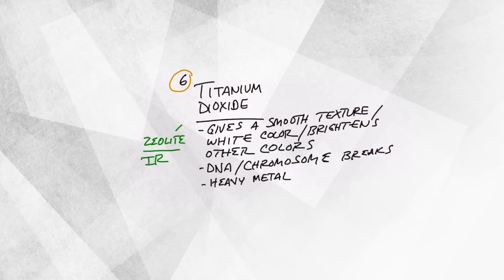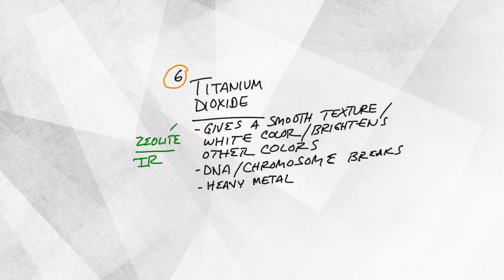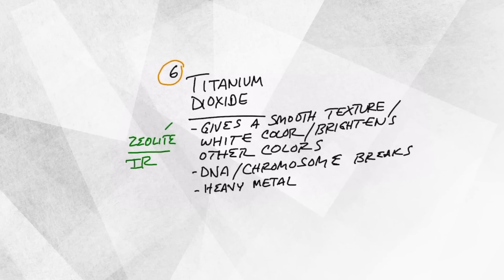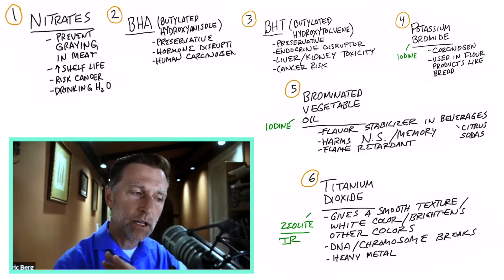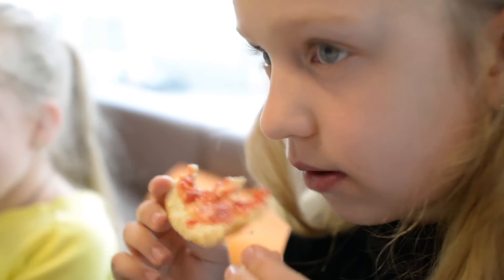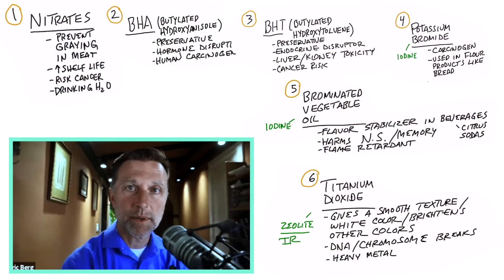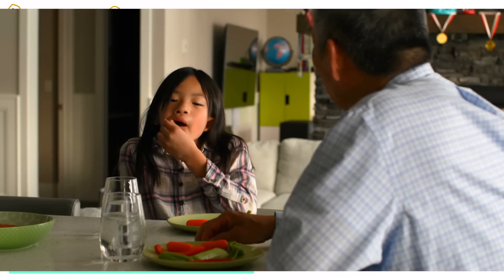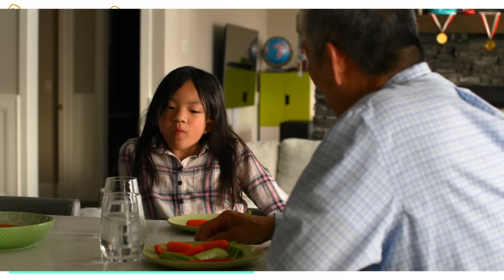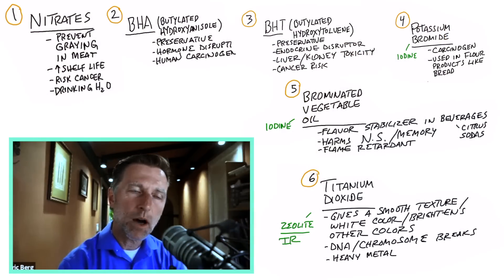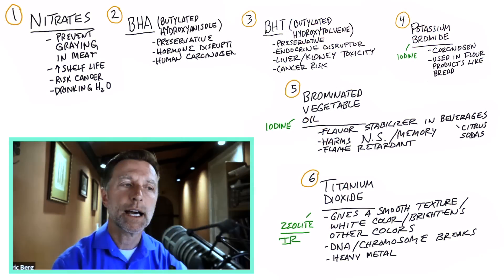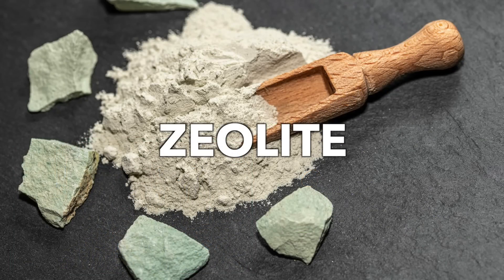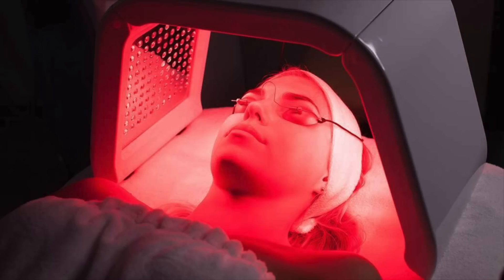The last one is titanium dioxide. This heavy metal gives candy a smooth texture and shiny, bright surface because it gives a white color. With different food colorings, it can make those colors pop really bright and brilliant. Unfortunately, a lot of these chemicals are in foods that kids eat. It's up to the parent's judgment if they're aware of these chemicals. There's one tiny problem: it causes DNA breaks and chromosome damage, which can link to increased cancer risk. The antidote is a volcanic ash mineral called zeolite, as well as infrared sauna, but I think the best thing is to just avoid it.